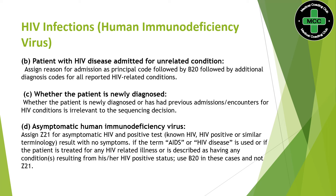Asymptomatic HIV means the patient has no signs and symptoms. For a patient getting a positive HIV result with no symptoms, we assign Z21. There is one exception: if the provider documents any HIV-related conditions that developed due to HIV, then you cannot assign Z21 — you will be assigning B20 instead.